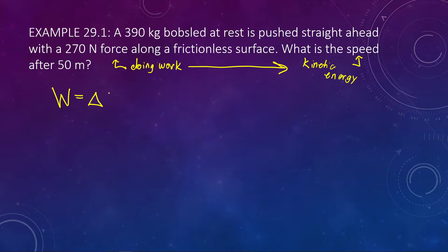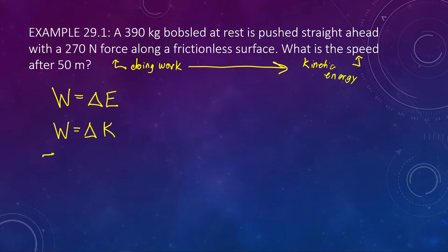There's a connection here: we are doing work and thus changing our kinetic energy. So this is a problem based on the work-energy equation: work equals a change in energy. In this particular problem, the energy we are changing is the kinetic energy, so I'm just going to rewrite this as delta K. We're asked for a speed, and v doesn't show up in this equation as is. Work is Fd cosine theta, and kinetic energy is one-half mv squared. So delta K becomes one-half mv final squared minus one-half mv initial squared. This is our full work-energy equation written out.